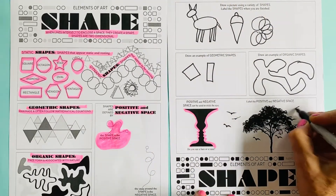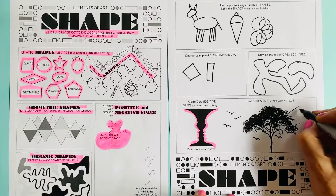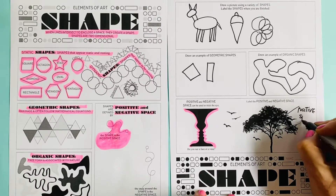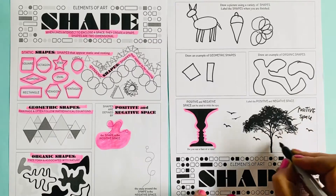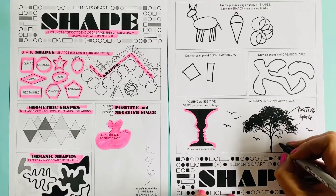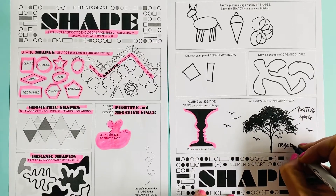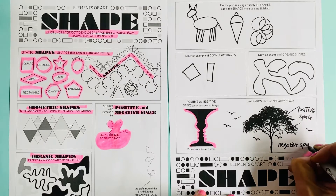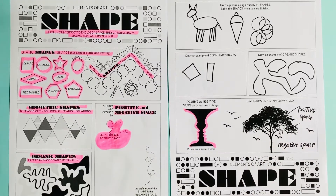Over here you're going to label the positive and negative space. The tree is the positive space, and everything around the tree is the negative space. That's all positive and negative space is.